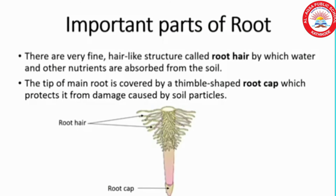Look at this picture carefully. There are very fine hair-like structures, that is called root hair. Through the root hair, water and other nutrients are absorbed from the soil. The second one: the tip of the main root is covered by a thimble-shaped root cap, which protects it from damage caused by soil particles. So the two important parts are root hair and root cap.